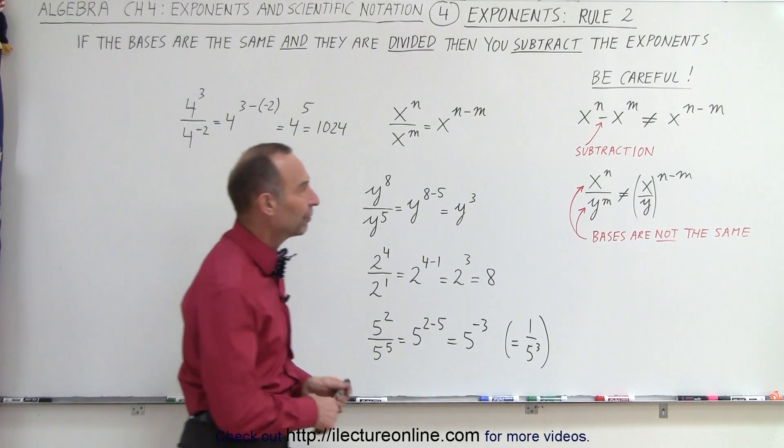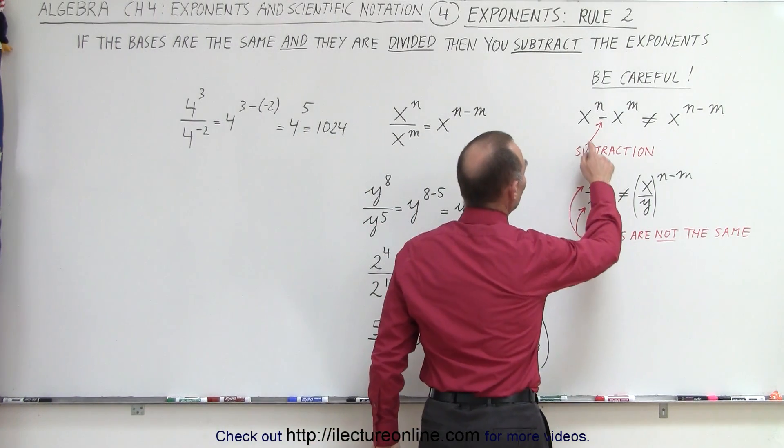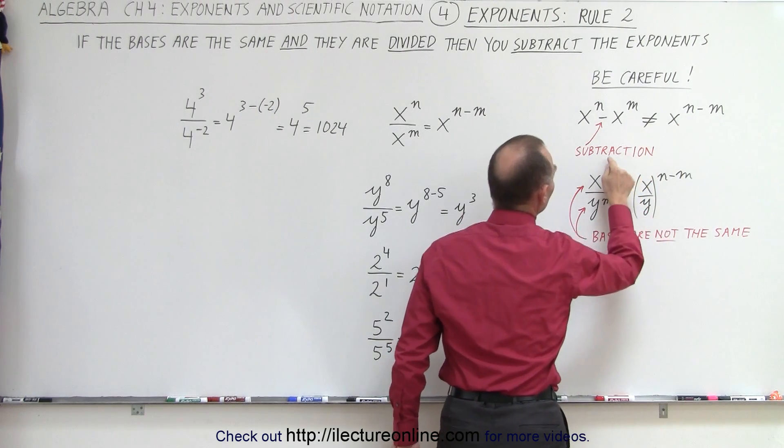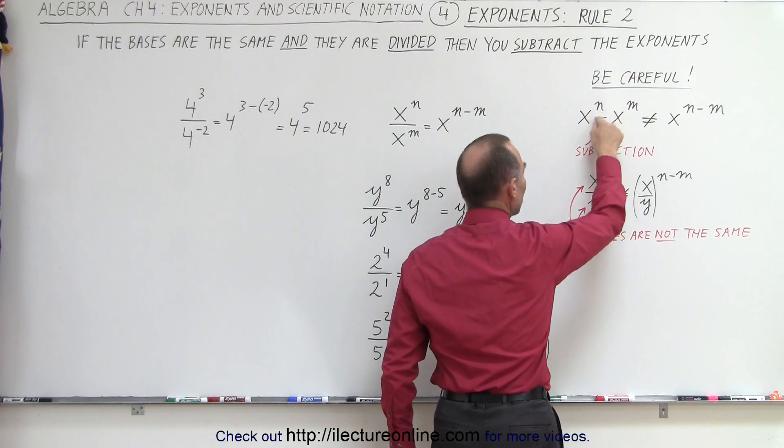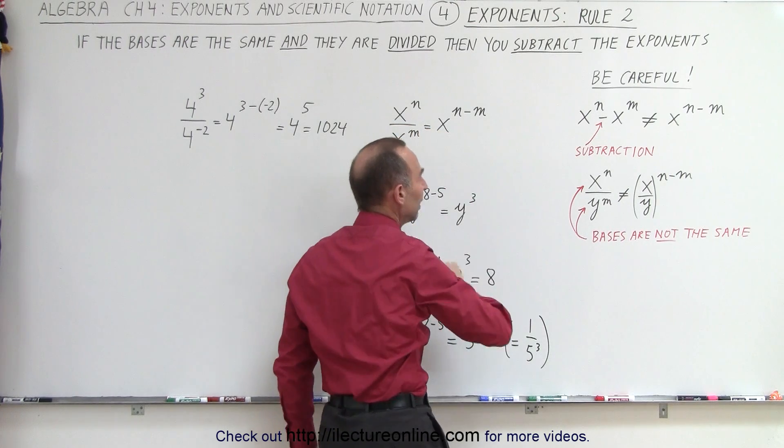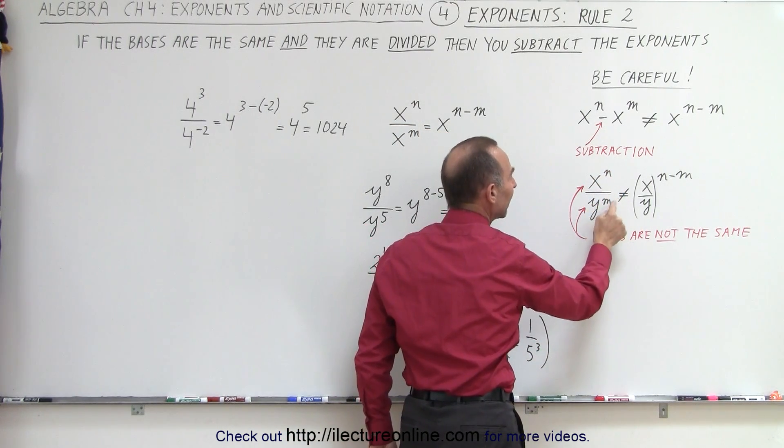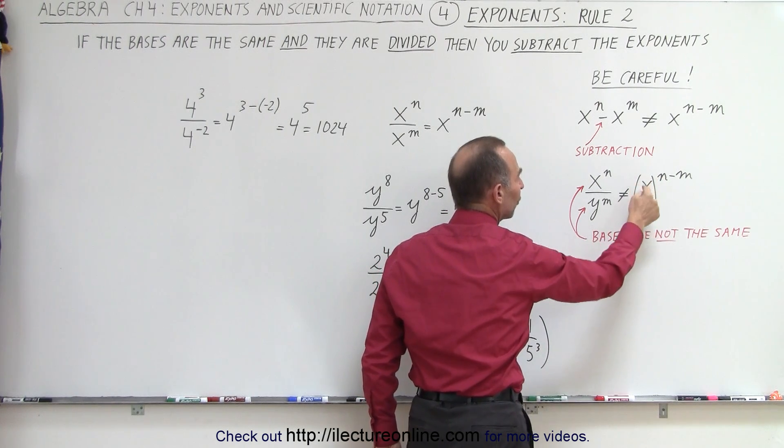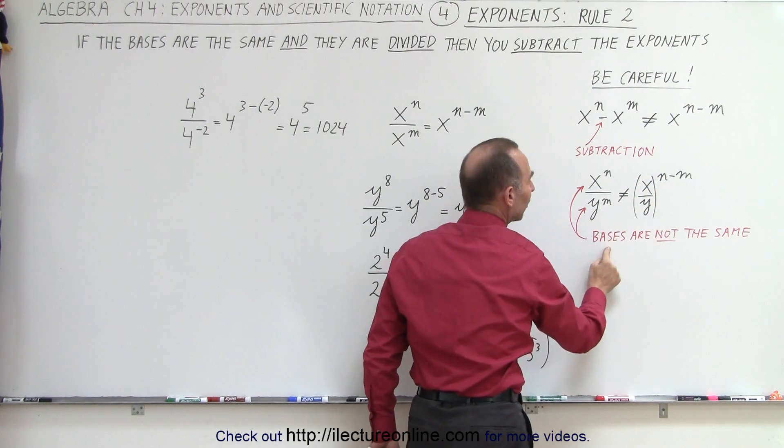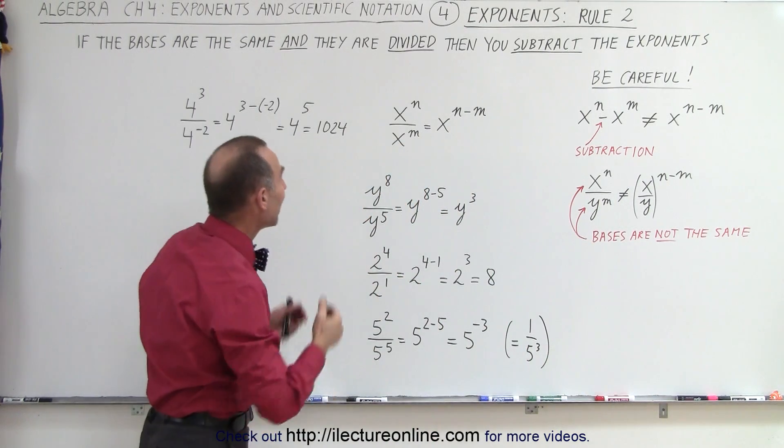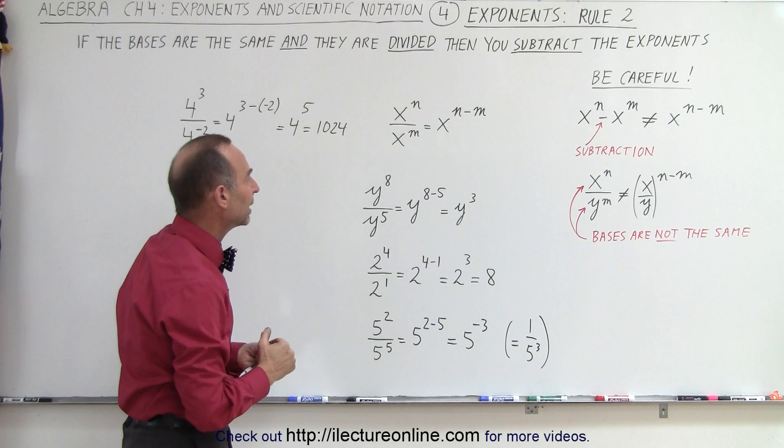And again, we need to be careful not to do something like this. We have x to the n minus x to the m, that is not equal to x to the n minus m. Be careful because there's a subtraction there, not a division. Or if we have x to the n divided by y to the m, again you cannot say that this is x over y to the n minus m, because the bases are not the same. Those are the two requirements: the bases must be the same and one must be divided by the other.